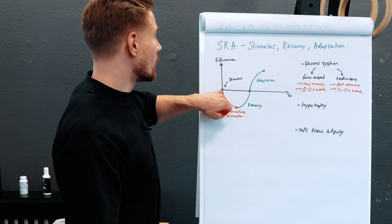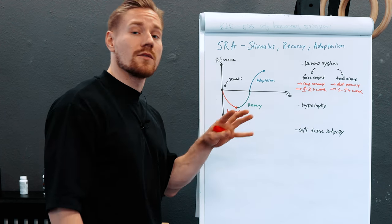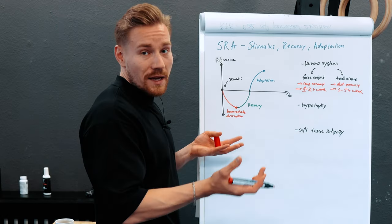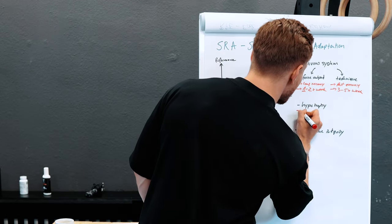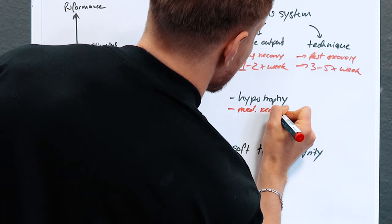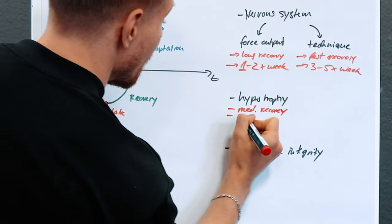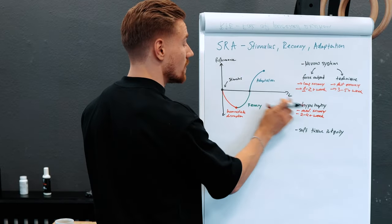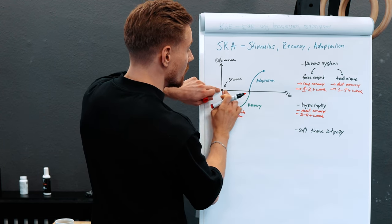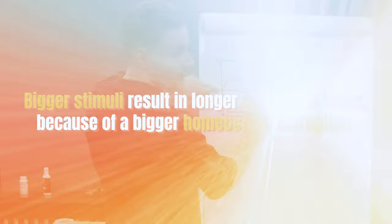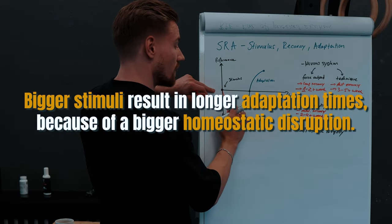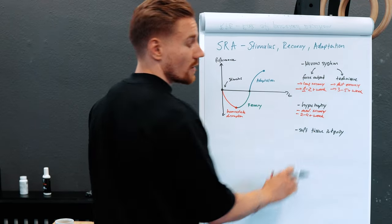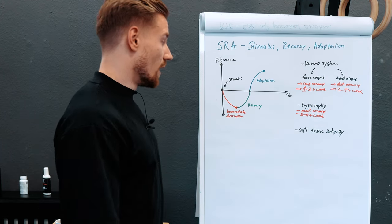Then we have the same thing for a hypertrophy response. If you want your muscle to grow, you need to provide a certain stimulus at a certain intensity — as covered in the first video. Here we have medium recovery, so you can train for hypertrophy about two to four times a week. The bigger the stimulus, the longer adaptation takes because the homeostatic disruption is bigger and recovery takes longer.